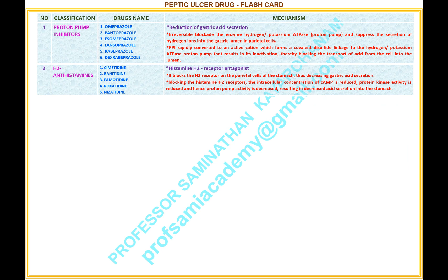Mechanism of H2 antihistamines: histamine H2 receptor antagonist. Detailed mechanism: it blocks the H2 receptor on the parietal cells of the stomach, thus decreasing gastric acid secretion. By blocking the histamine H2 receptors, the intracellular concentration of cyclic AMP is reduced, protein kinase activity is reduced, and hence proton pump activity is decreased, resulting in decreased acid secretion into the stomach.